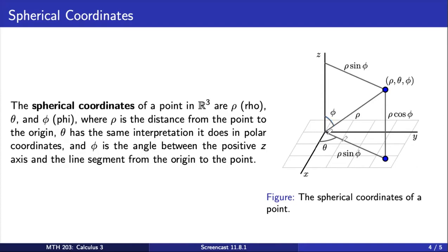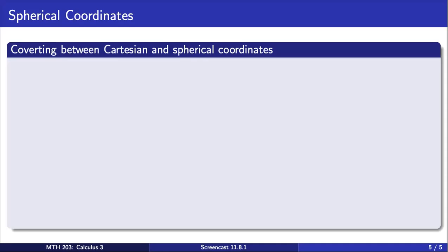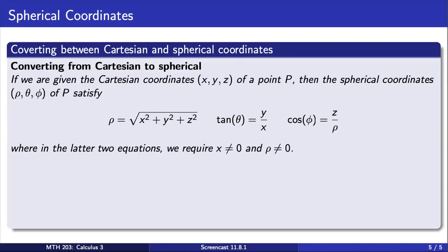Quick note: this line segment from the origin to the point—the length of this segment is ρ. Let's look at how to convert between Cartesian coordinates and spherical coordinates. Converting from Cartesian to spherical first: if we are given the Cartesian coordinates (x, y, z) of a point P, then the spherical coordinates (ρ, θ, φ) of P satisfy ρ equals the square root of x² + y² + z².